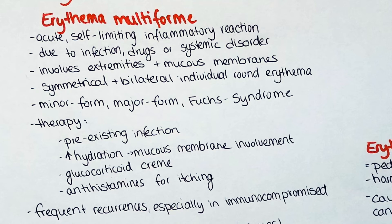Therapy is necessary for the major form as well as for the Fuchs syndrome. It is important to figure out the underlying cause and treat it as soon as possible. Proper hydration is of importance, as fluid can be lost through the ulcerations in the mucosal membranes. External treatment involves glucocorticoid creams. Also antihistamines can be given to alleviate the itching. The disease is associated with frequent recurrences, often annually, but even more frequent in immunocompromised patients.